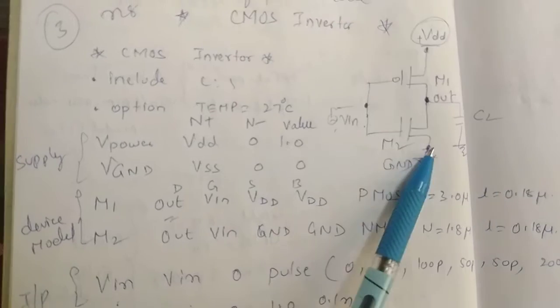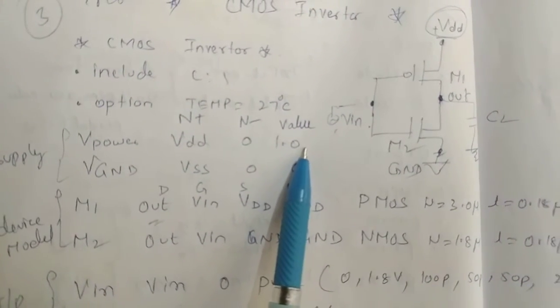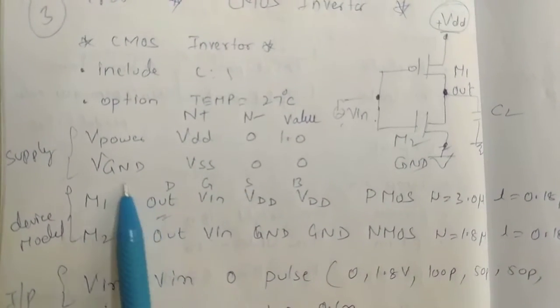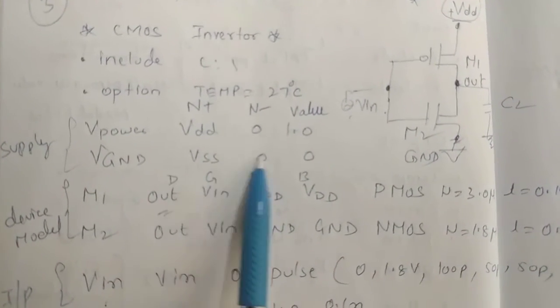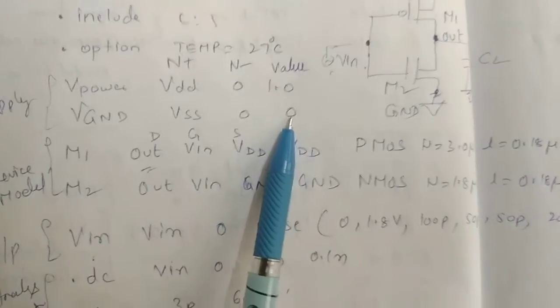The value is 1 volt. Similarly, this ground Vground we write as VSS. Output: this is connected to 0 and it is 0.